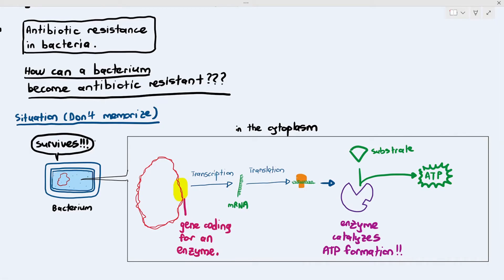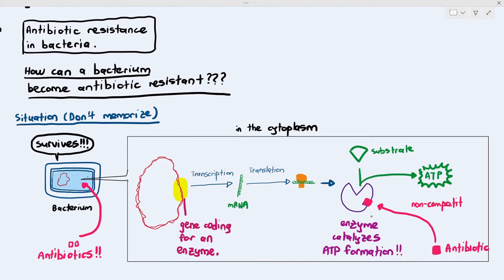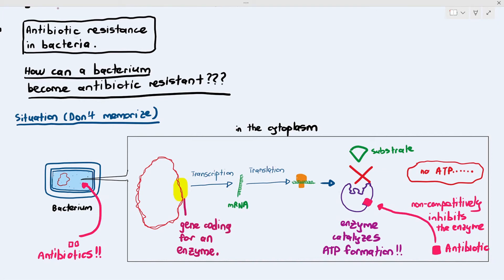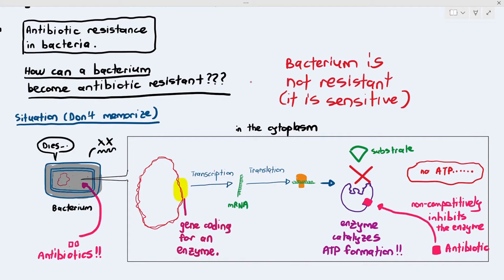If I wanted to kill this bacterium, I would give it antibiotics. The antibiotic — square-shaped — enters the bacterium and non-competitively inhibits the enzyme by binding to the allosteric site. Because it binds to the allosteric site, the 3D shape of the enzyme changes and the substrate can no longer bind to the active site. The bacteria no longer has ATP and therefore dies — it is sensitive to the antibiotic.